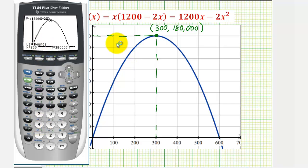So we'll press four. Left bound means move the cursor to the left side of the vertex. Somewhere here, press enter. Move to the right of the vertex. Somewhere here, press enter. And enter one more time. Notice how the calculator is not perfect. We need to recognize that this does represent an x value of 300. And the y value is 180,000.